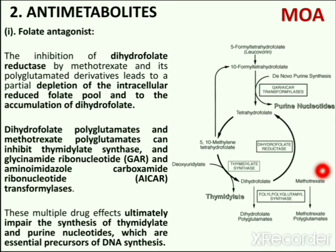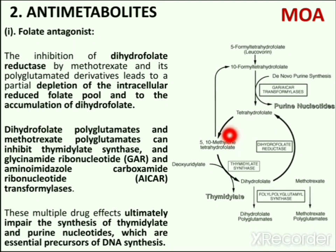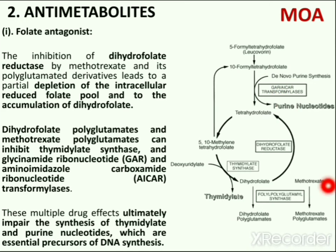Folate antagonists inhibit the enzyme dihydrofolate reductase. Inhibition of dihydrofolate reductase leads to partial depletion of tetrahydrofolate cofactors — 5,10-methylene tetrahydrofolic acid and 10-formyl tetrahydrofolic acid. These cofactors are essential for the respective synthesis of thymidylate and purines. In addition, methotrexate undergoes conversion to a series of polyglutamates in both normal and tumour cells, which inhibits the enzyme thymidylate synthase.